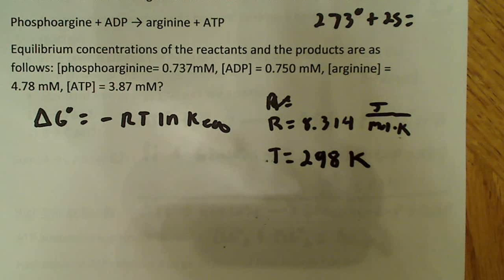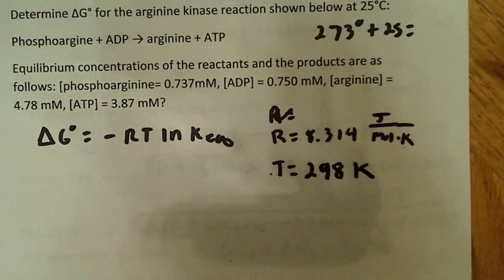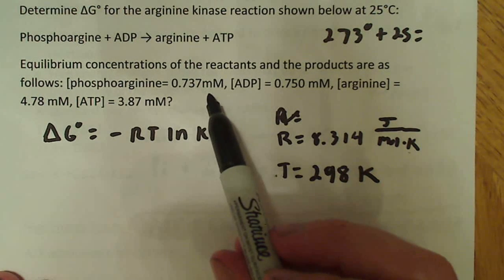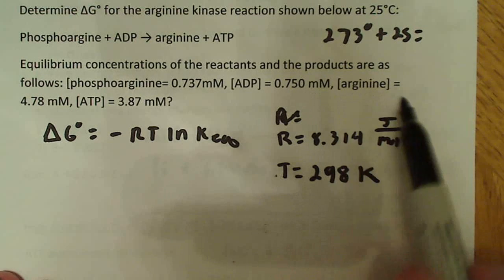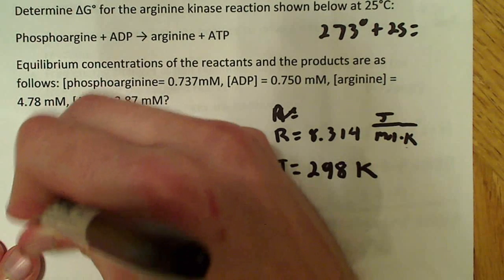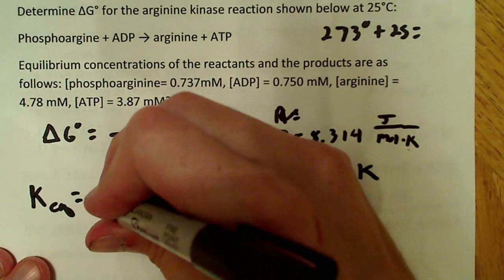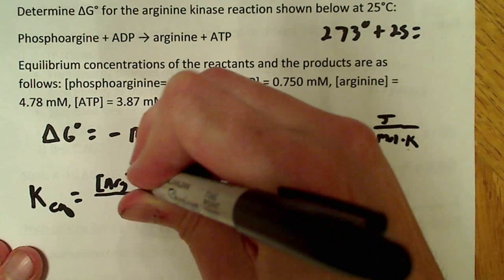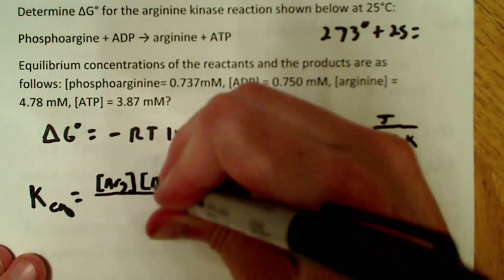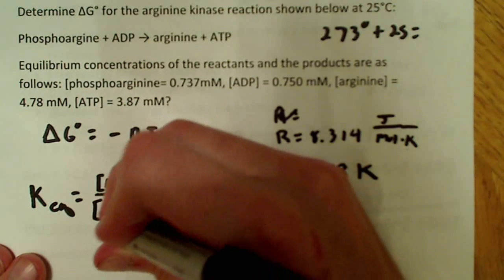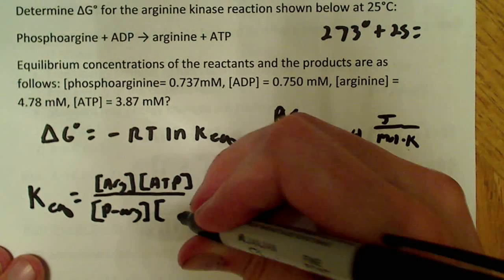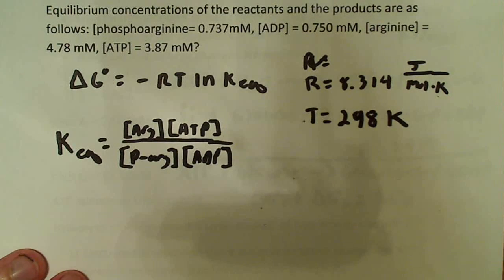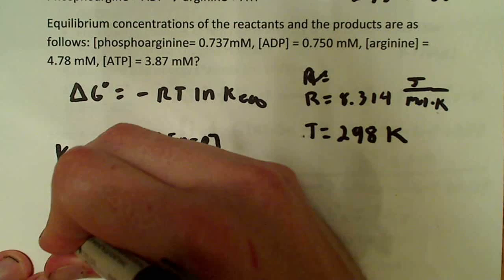The only thing we need now is the equilibrium constant, and fortunately we can calculate it directly. The only thing to watch out for is that these concentrations are in millimoles — moles is the standard unit, so we need to convert all of these from millimoles to moles. Recall that K-eq equals the concentration of products over reactants: arginine times ATP, divided by phospho-arginine times ADP.